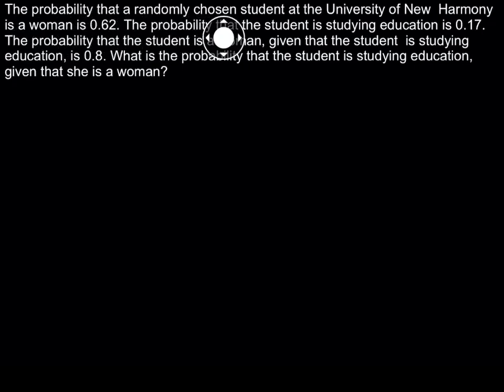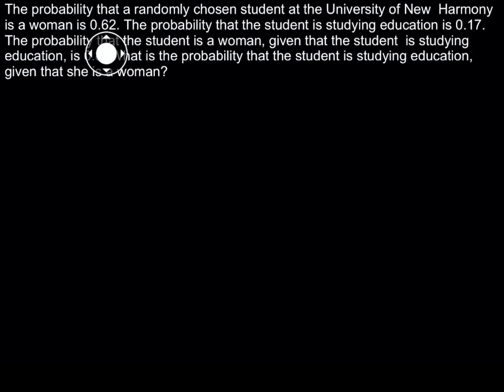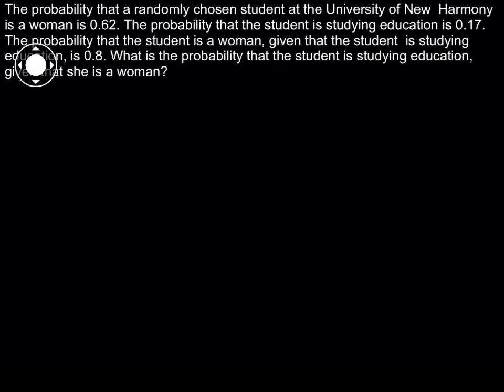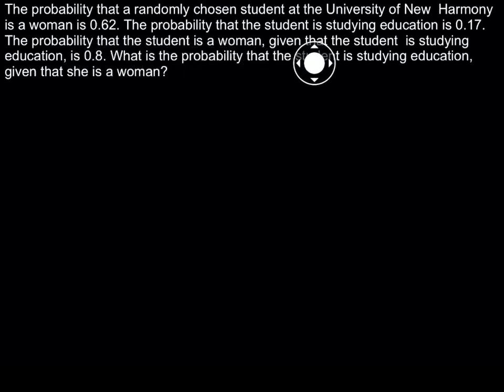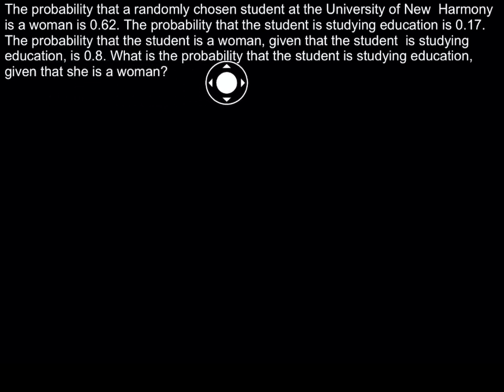The probability that a randomly chosen student at the University of New Harmony is a woman is 0.62. The probability that the student is studying education is 0.17. The probability that the student is a woman given that the student is studying education is 0.8. What is the probability that the student is studying education given that she is a woman?